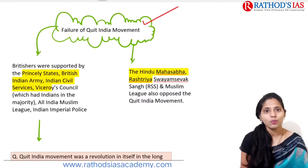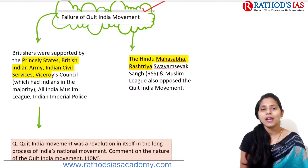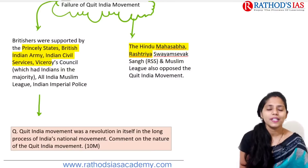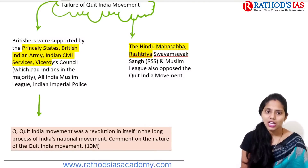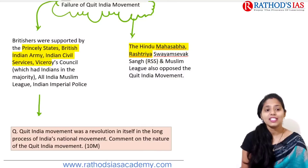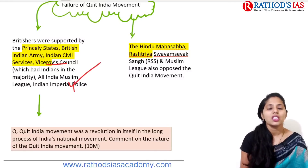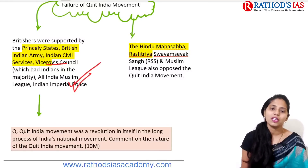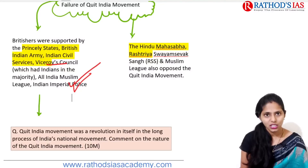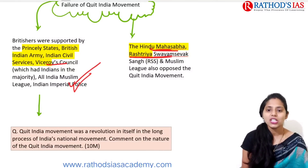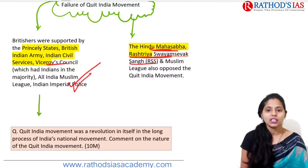The Quit India Movement failed because the British received extensive support from princely states, the British Indian Army, Indian Civil Services, and the Viceroy's Council. Additionally, Hindu Mahasabha, Rashtriya Swayamsevak Sangh, and the Muslim League also opposed this movement.